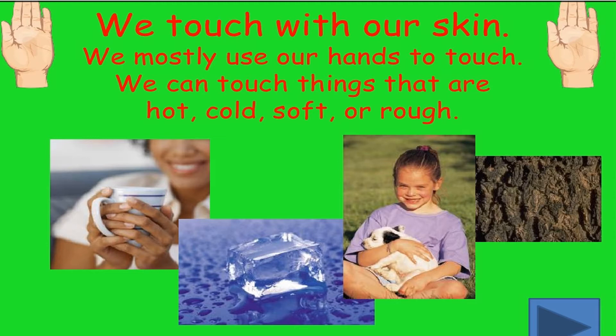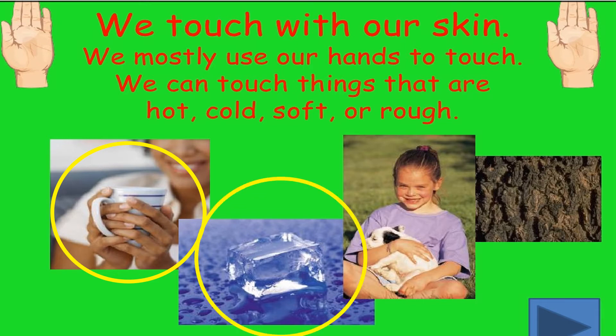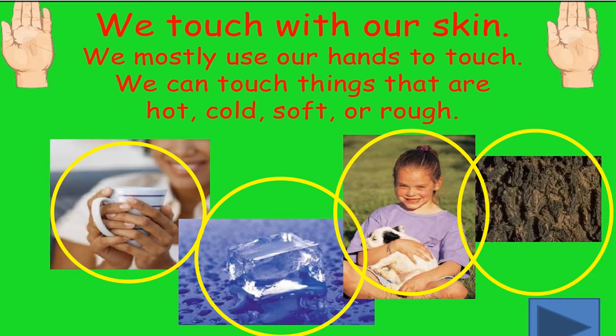Now we are going to talk about the sense of touch. We touch with our skin — we use our hands and feet to touch, but it is the skin which feels different textures. We can touch things that are hot, like a cup of coffee. We can touch something cold like ice, something soft like a pet dog or soft toy, and something rough like the bark of a tree or a tarred road.